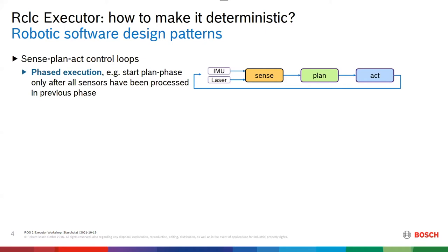The most general software pattern you will find is sense-plan-act control, where you have a phased execution of different parts. Essentially, you want all sensor acquisition to be finished before you start your localization or planning phase. Currently, it's not possible to synchronize these callbacks, so we need a mechanism to phase the execution of certain callbacks.